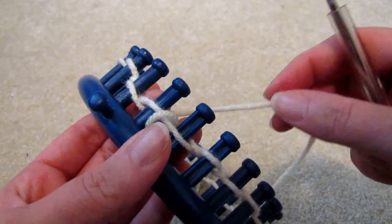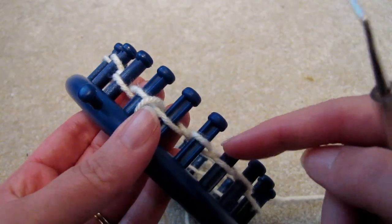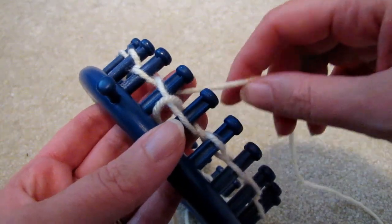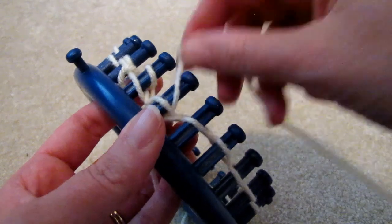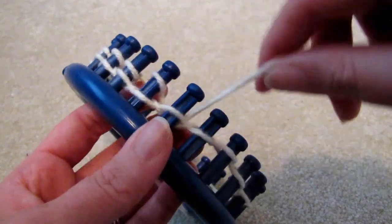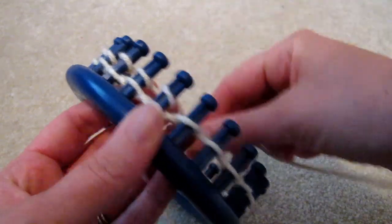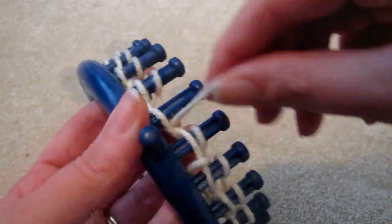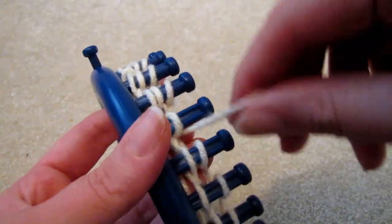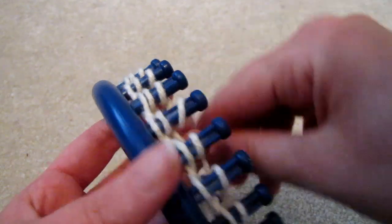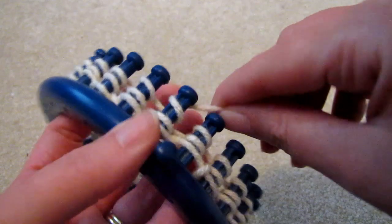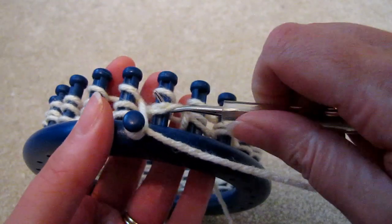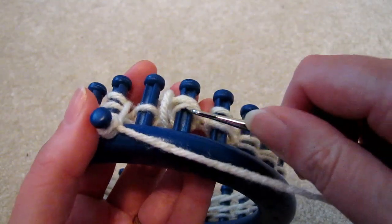This pattern calls for one round of the double E-wrap stitch and then two rounds with the knit stitch. So we'll start with the double E-wrap, which means we wrap the loom not just once but twice. So that each peg has three loops. And then knit over two over one.